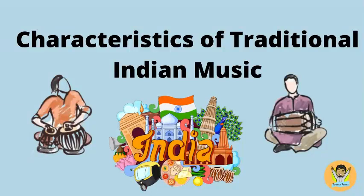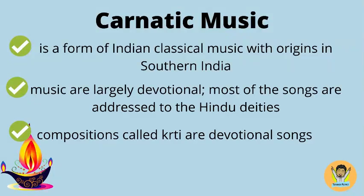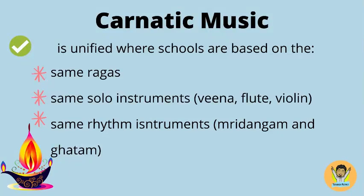Characteristics of Traditional Indian Music. Carnatic music is a form of Indian classical music with origins in Southern India. The music is largely devotional — most of the songs are addressed to Hindu deities, and compositions called Krti are devotional songs. It is unified, where schools are based on the same ragas, same solo instruments — Vena, flute, and violin — and the same rhythm instruments, Mridangam and Gadam.